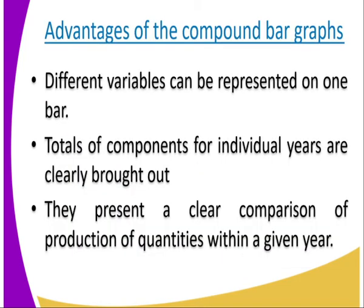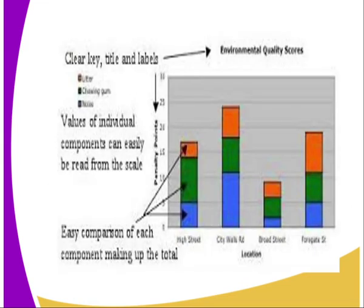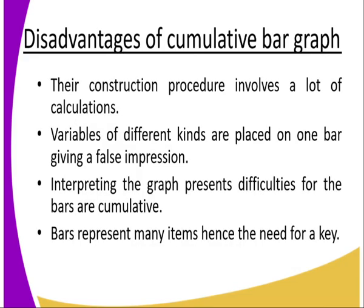Now the advantages of the cumulative bar graph: number one, different variables can be represented in one bar. Number two, the totals of components for individual years are clearly brought out. Number three, they represent a clear comparison of production, as you can see from the image. Disadvantages: the construction procedure involves a lot of calculation — you need to gather cumulative data. Variables of different kinds are pressed into one bar, giving a false impression. Third, interpreting the graph presents difficulties because bars are cumulative and represent many items, requiring a key.